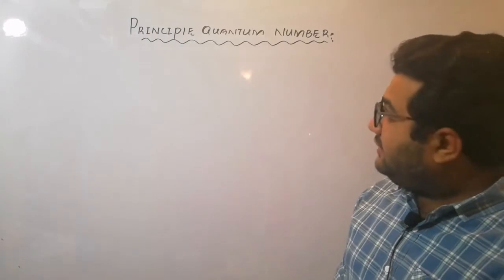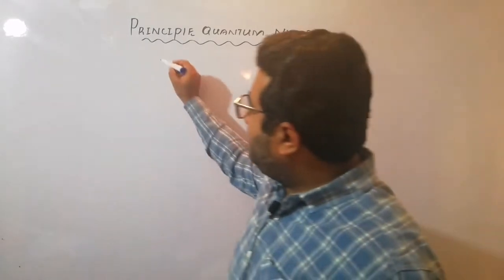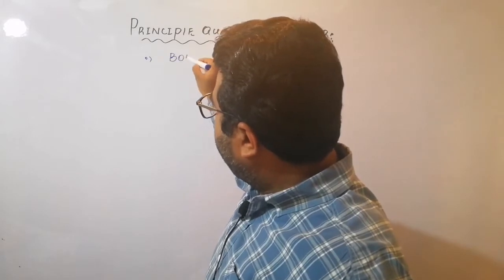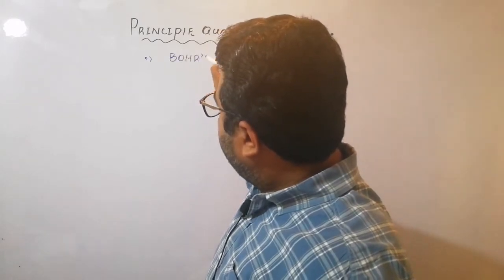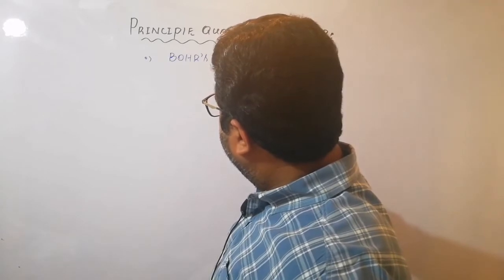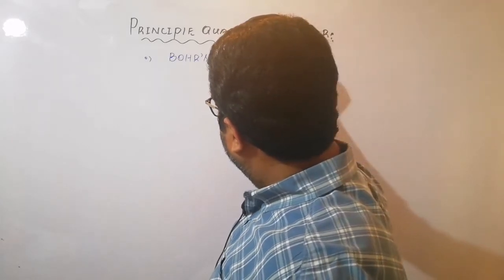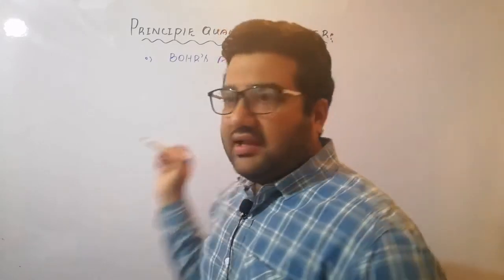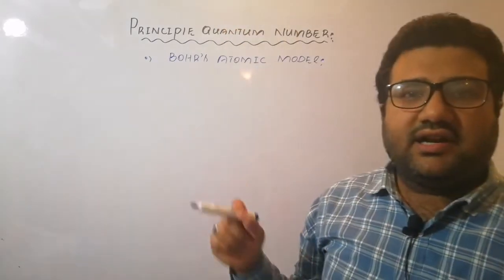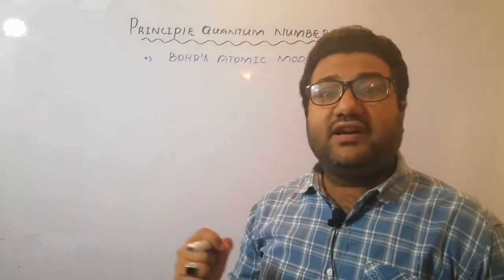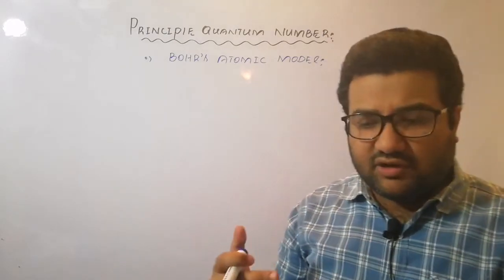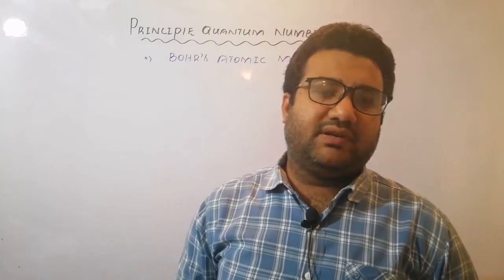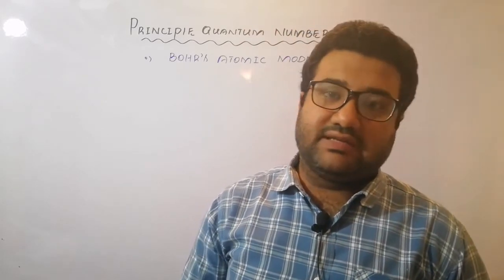Now principle quantum number - the idea was provided by Niels Bohr in Bohr's atomic model. In some books it is written that Bohr's atomic model was a one-dimensional model. One-dimensional model means it was based on a single quantum number, and that quantum number is the principle quantum number.